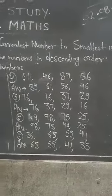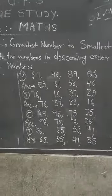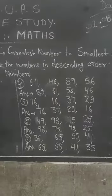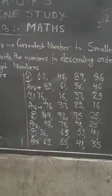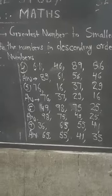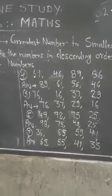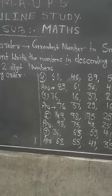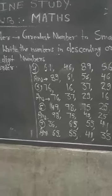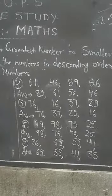Question number 6 में है: 49, 98, 75, 25. So, 98 greatest number है. Greatest मतलब सबसे बड़ा है, उससे छोटा 75, then 49, and last